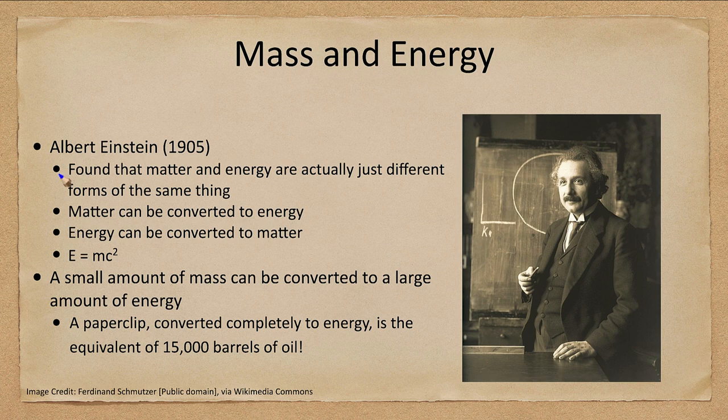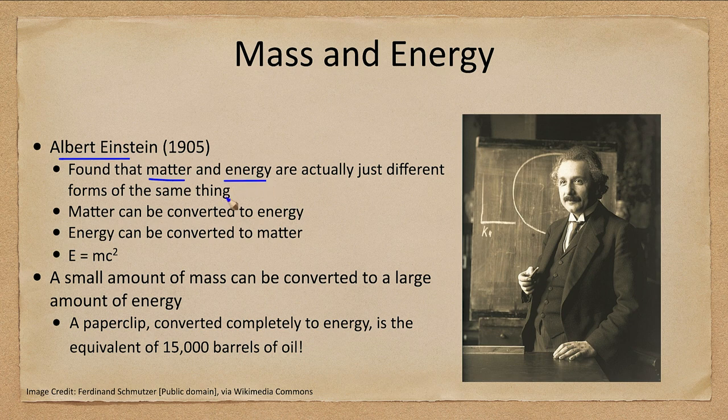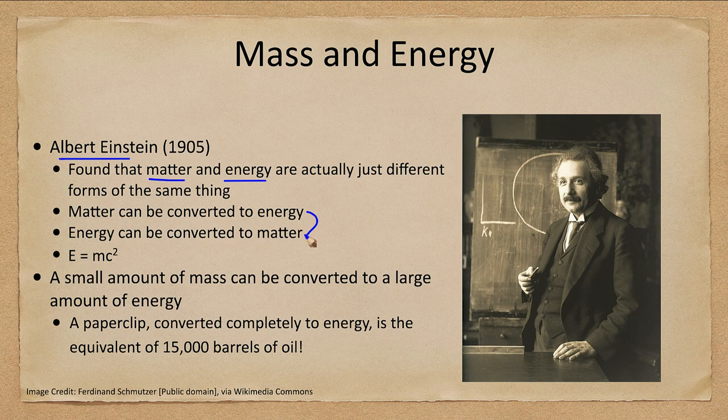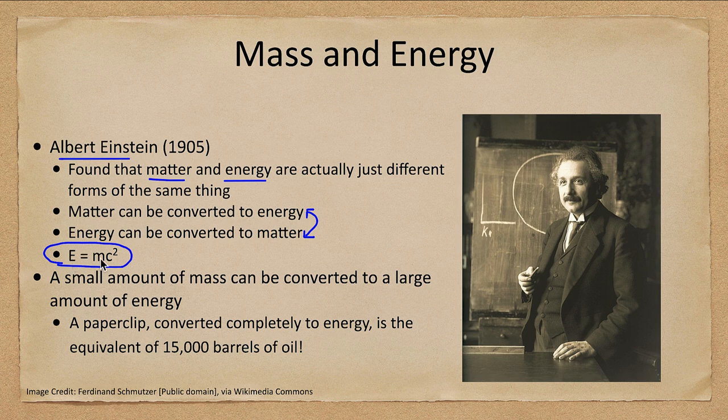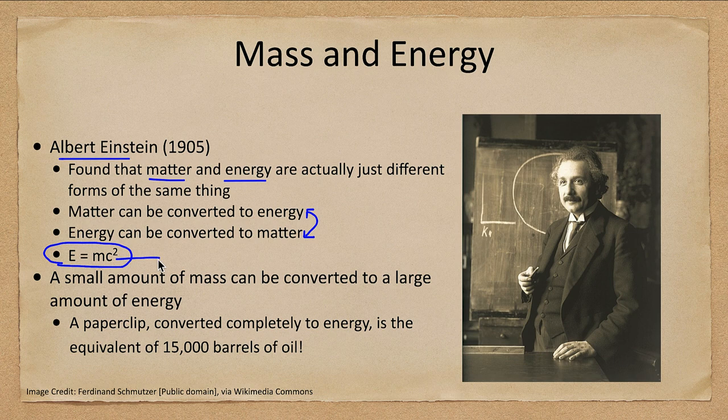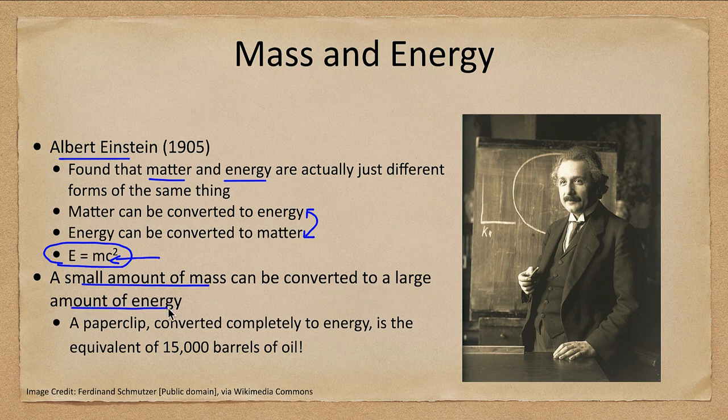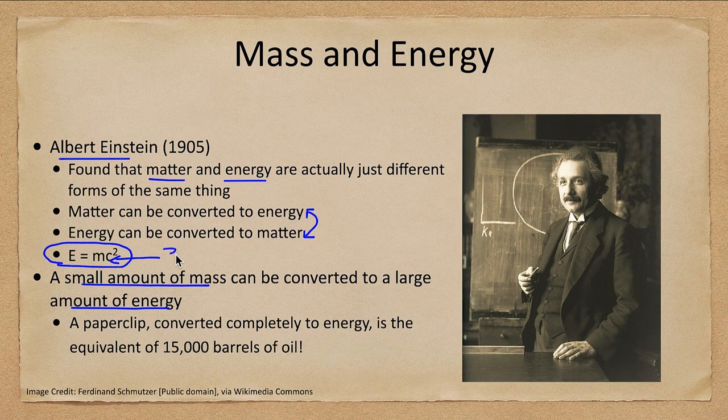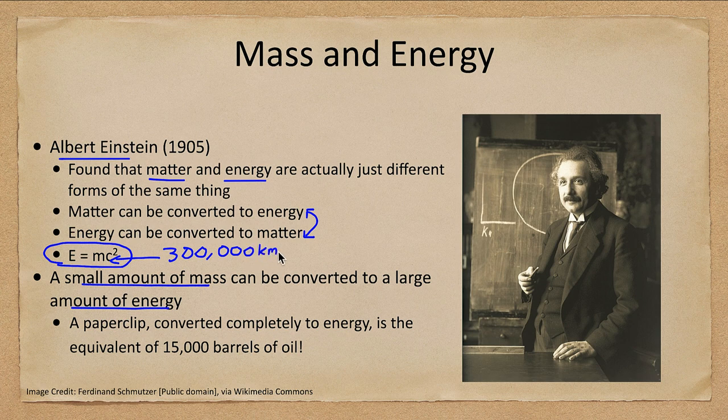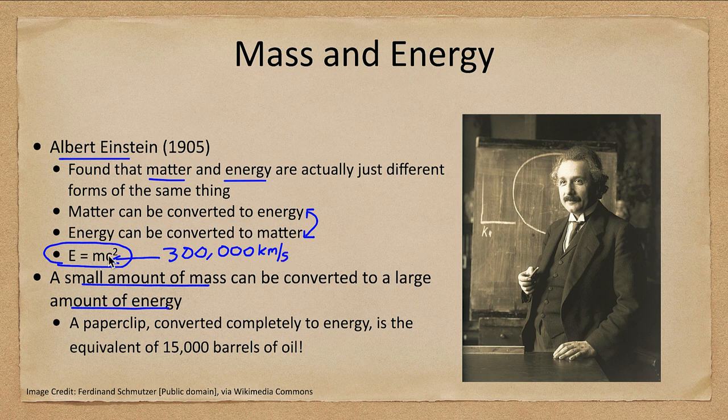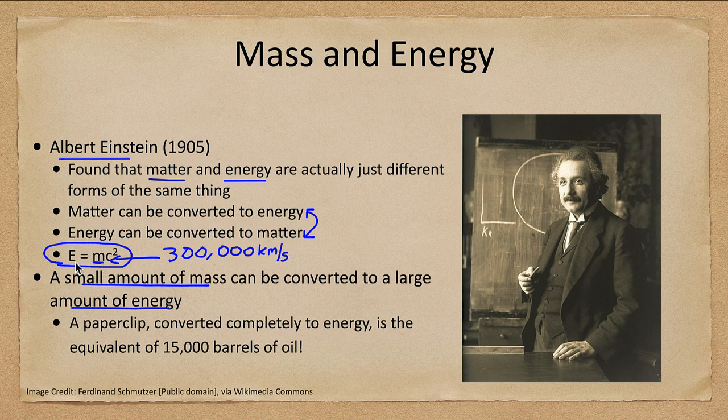Albert Einstein told us that matter and energy are just different forms of the same thing. You can convert matter to energy and energy back to matter. One equation that most people have heard of is Einstein's E equals mc squared. That is a relationship between energy and mass where the constant c is the speed of light. What that means is that a very small amount of mass is converted to a large amount of energy, because the speed of light is 300,000 kilometers per second. When we square that, that makes an even bigger number. Multiply that by the mass and you get the amount of energy released.